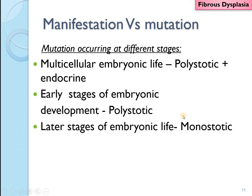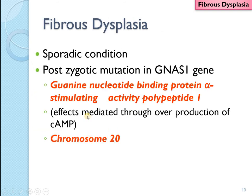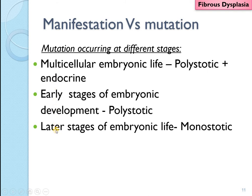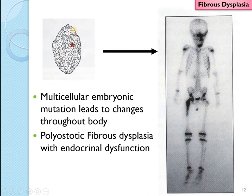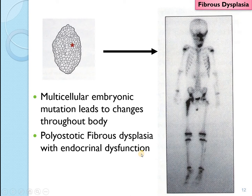The GNAS1 mutation can occur at three different stages. If the mutation occurs during a very early multicellular embryonic stage, when cells have not yet differentiated, they go on to form different parts — parts of the head, skin, endocrinal system, and bone. In such a case, you will have polyostatic fibrous dysplasia, which may be associated with endocrinal dysfunction as well as pigmentary changes.